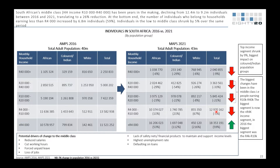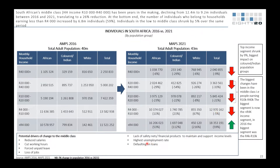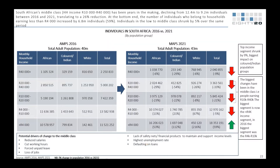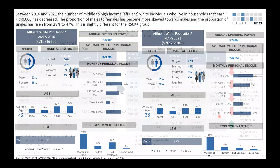South Africa now has among the highest unemployment rates of all countries that record unemployment. On the credit data, we can see that through COVID a huge number of people were not able to keep up with the credit debt they had maintained.